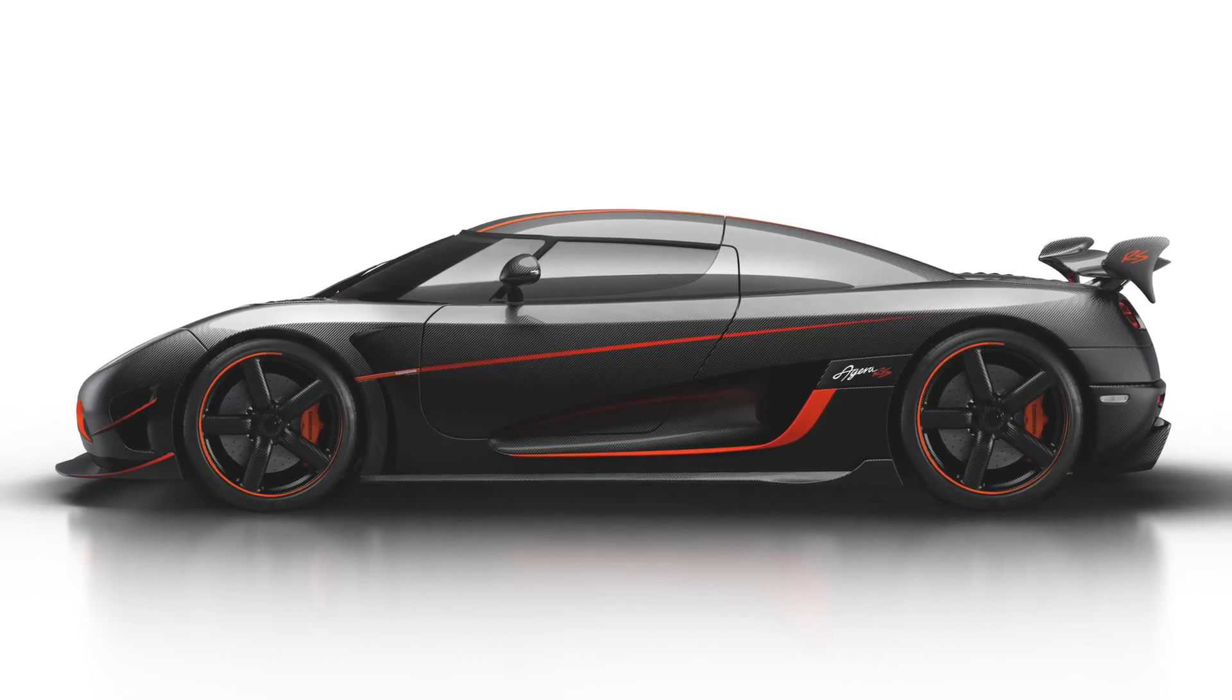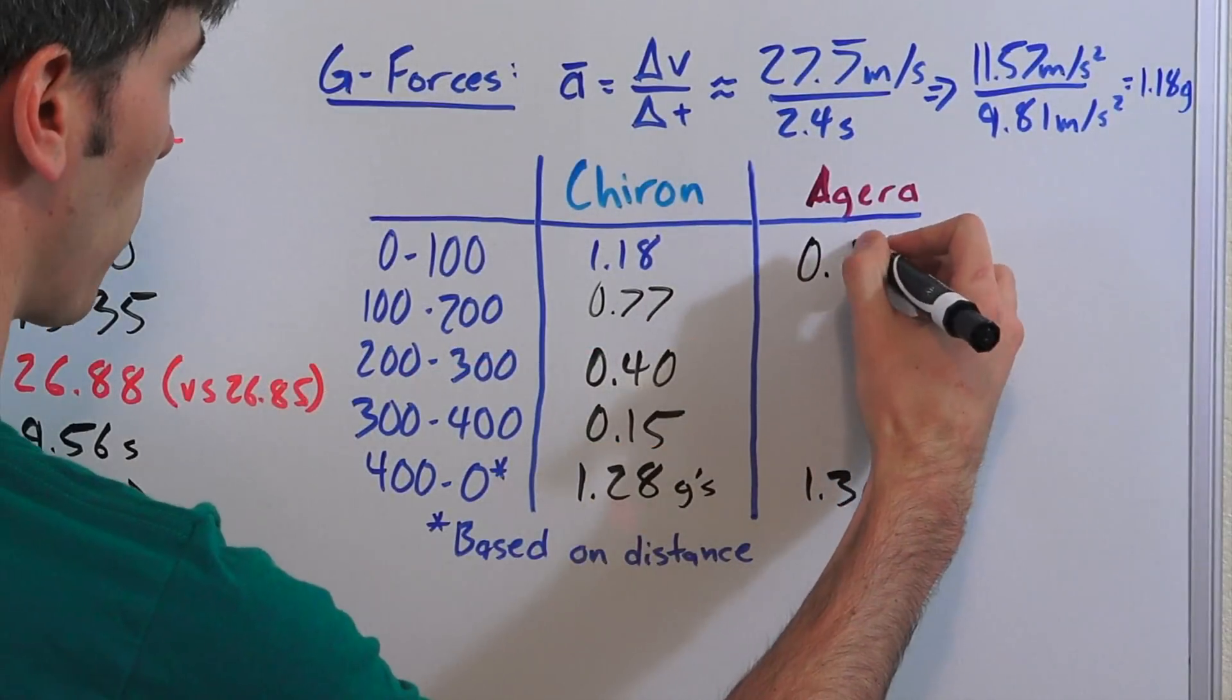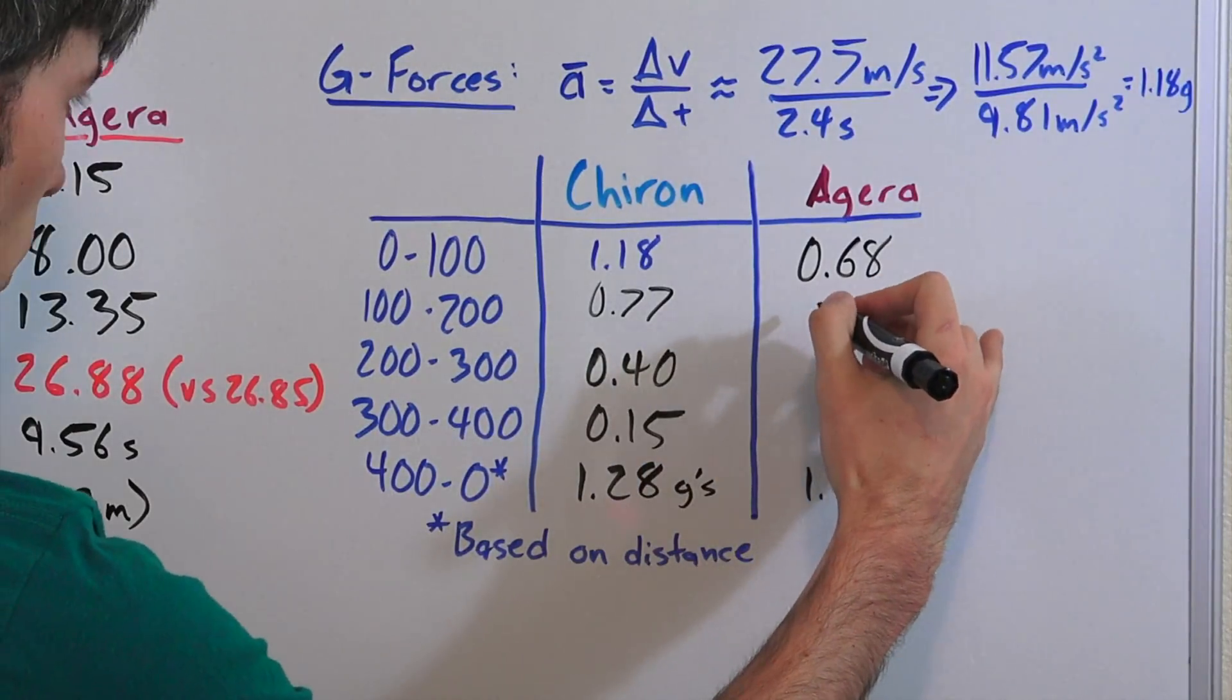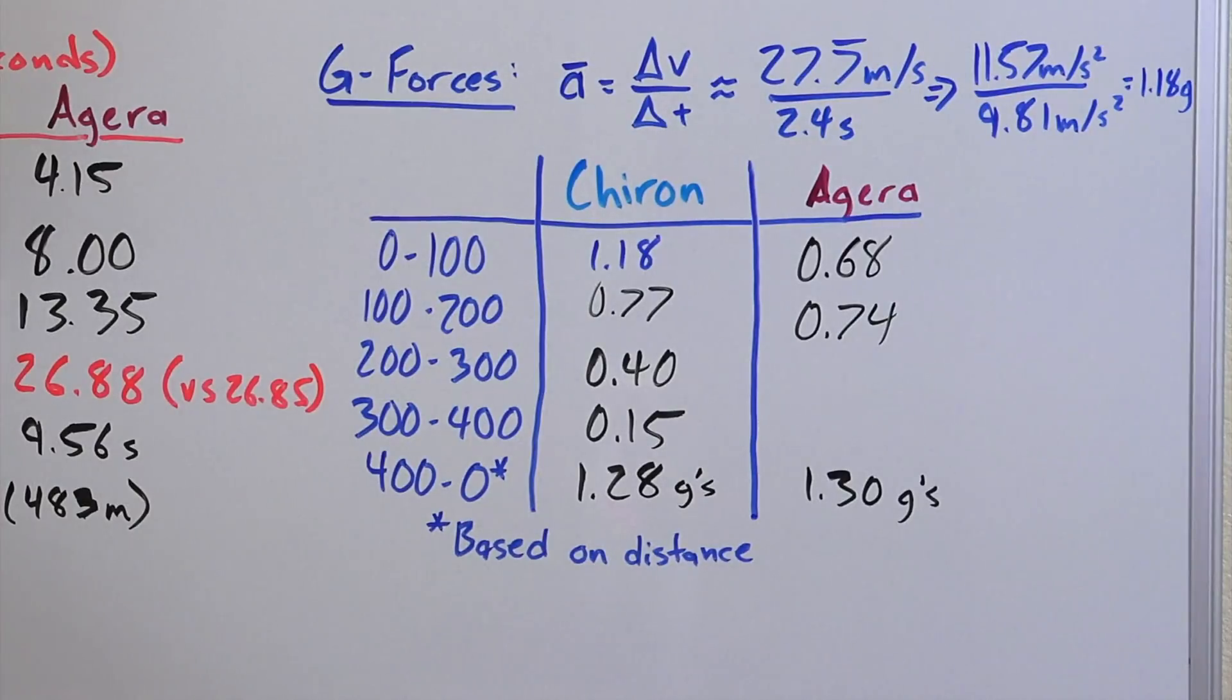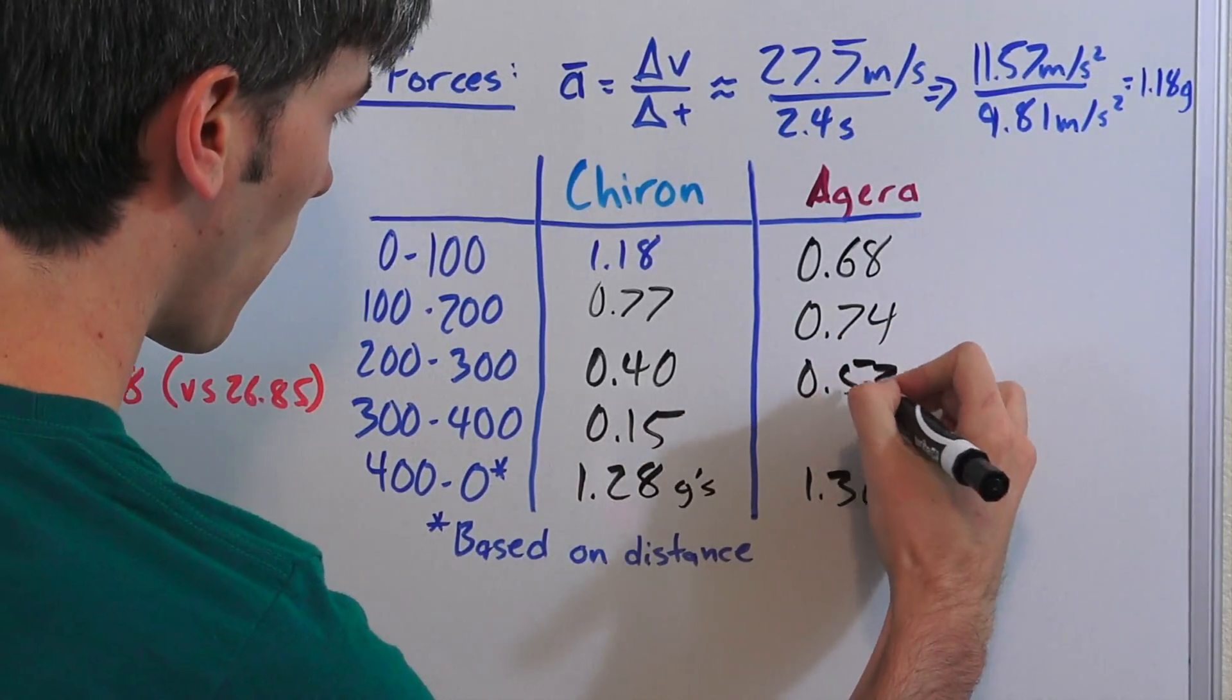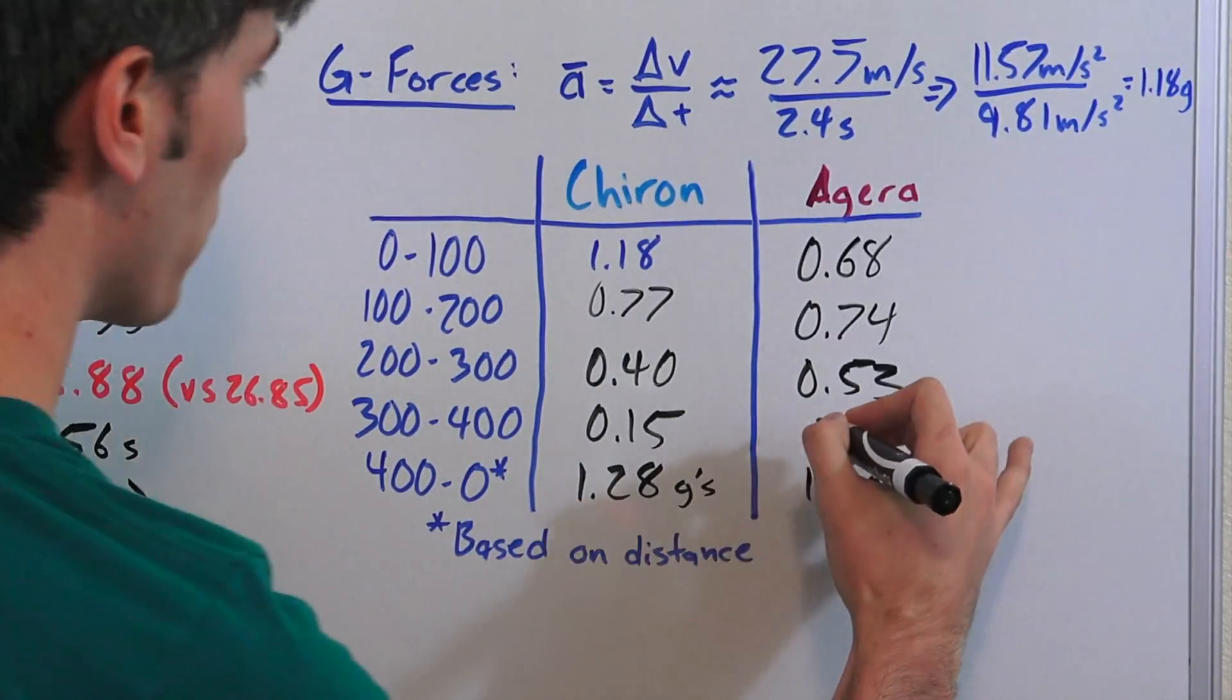Now for the Agera there was quite a bit of wheel slip. That 0 to 100 only accelerating at 0.68 g's and then actually improving from 100 to 200 at 0.74. Once they got out of that wheel slip and were able to put all of their power down, perhaps a little bit more added downforce from the speeds they're getting to. Then from 200 to 300 averaged 0.53 g's. And from 300 to 400 they were at 0.21 g's.